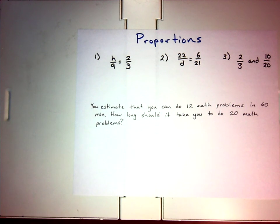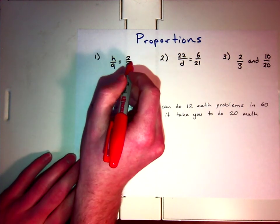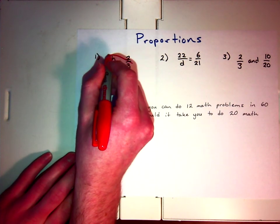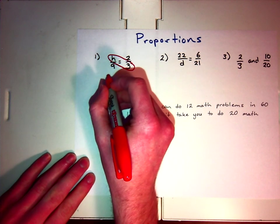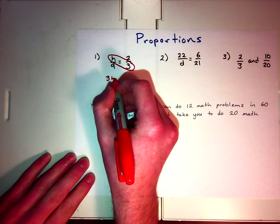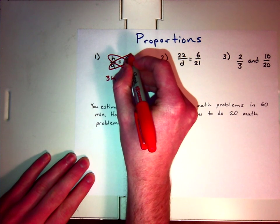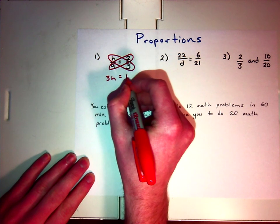But we're going to look at how do you use a proper procedure that's going to help you when you don't necessarily see it right away. So what you can do is, it's called the butterfly method, where you can multiply across here, and we get three H, and then we multiply across here, creating our butterfly, and that equals 18.